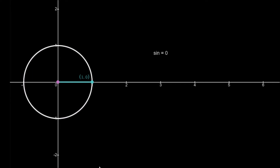In this video, we're going to cover some basic trigonometry. We start off with a circle which has a radius of 1. We have a blue dot, and this blue dot is going to rotate around the circle in an anti-clockwise direction.